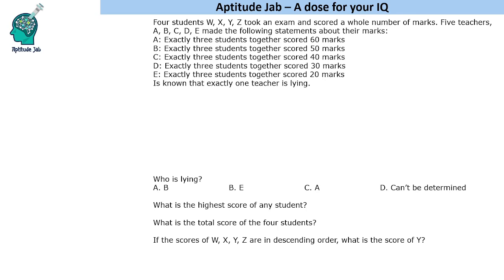If only one teacher is lying, how do we determine who? A is saying three are scoring total 60, B is saying 50, C is saying 40. Only one is lying, others are speaking the truth, so all of them are reporting different sets of three students.